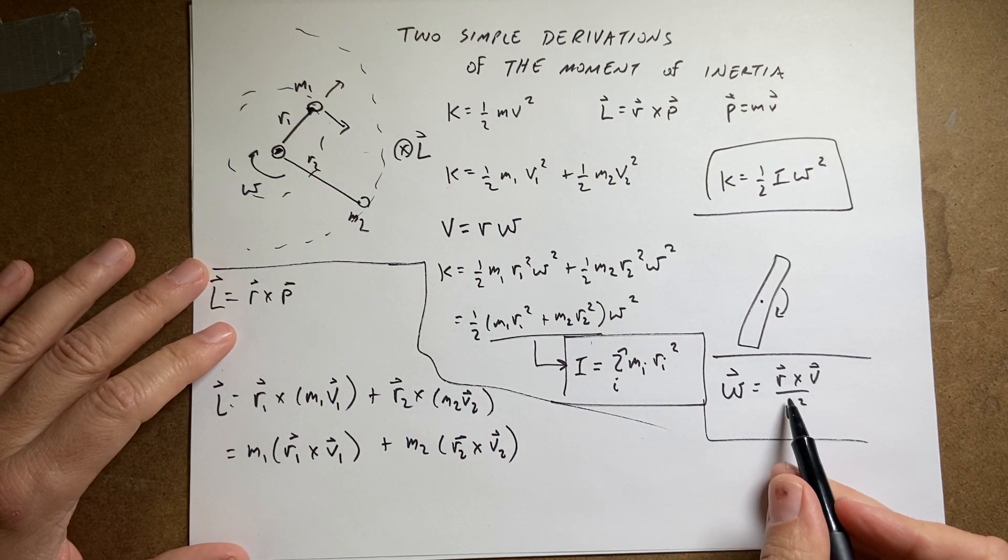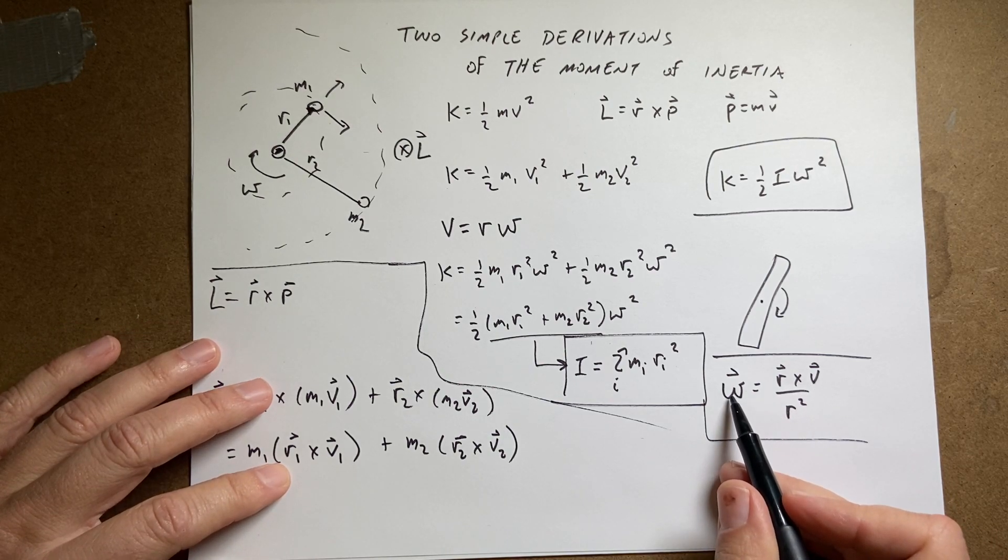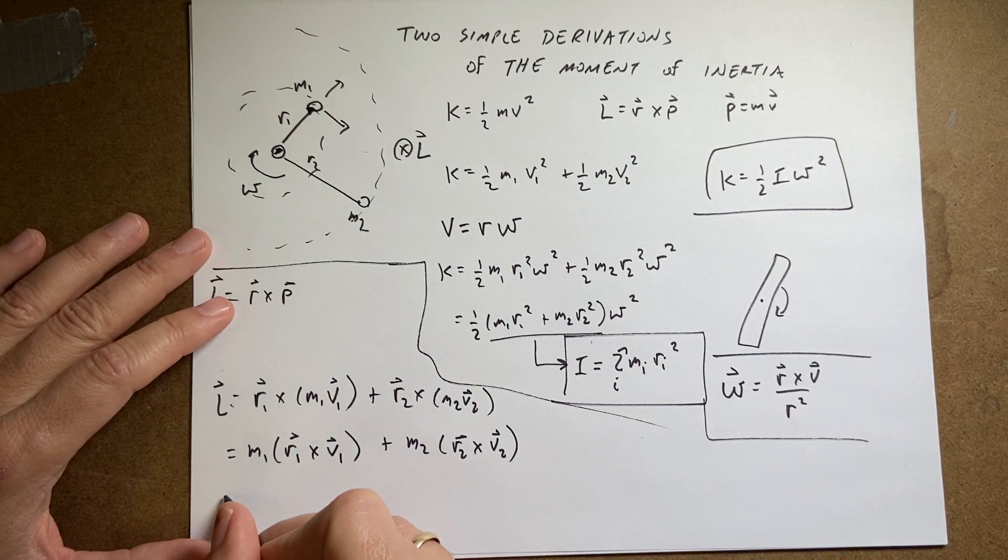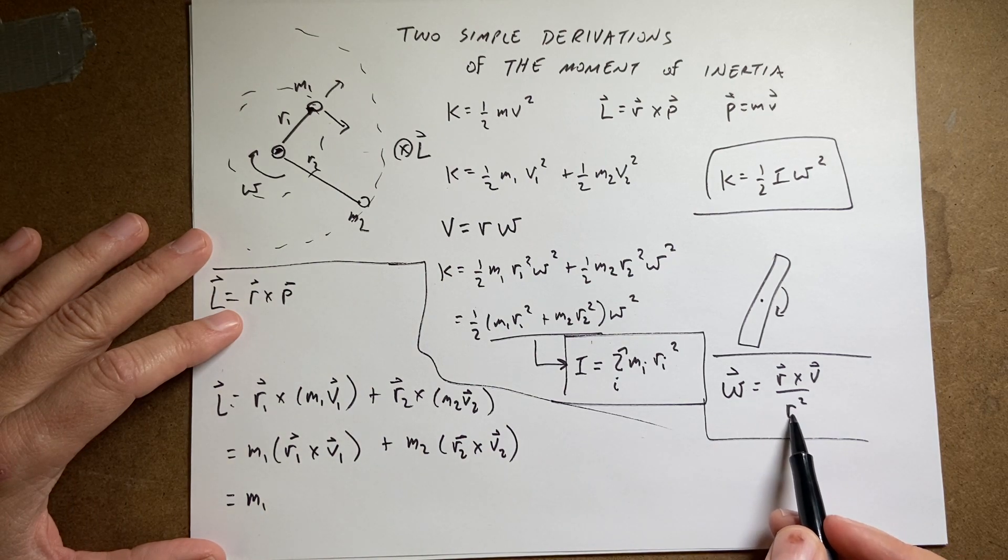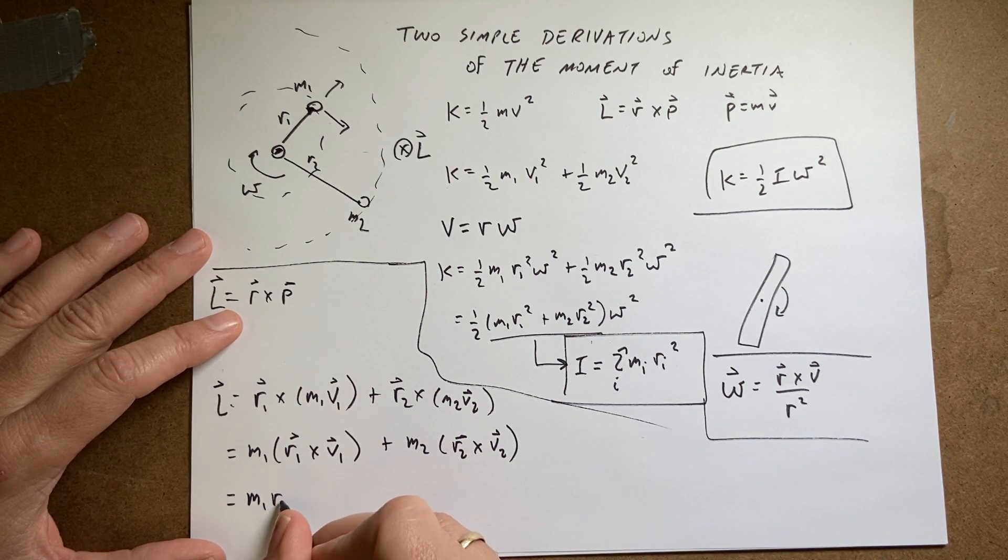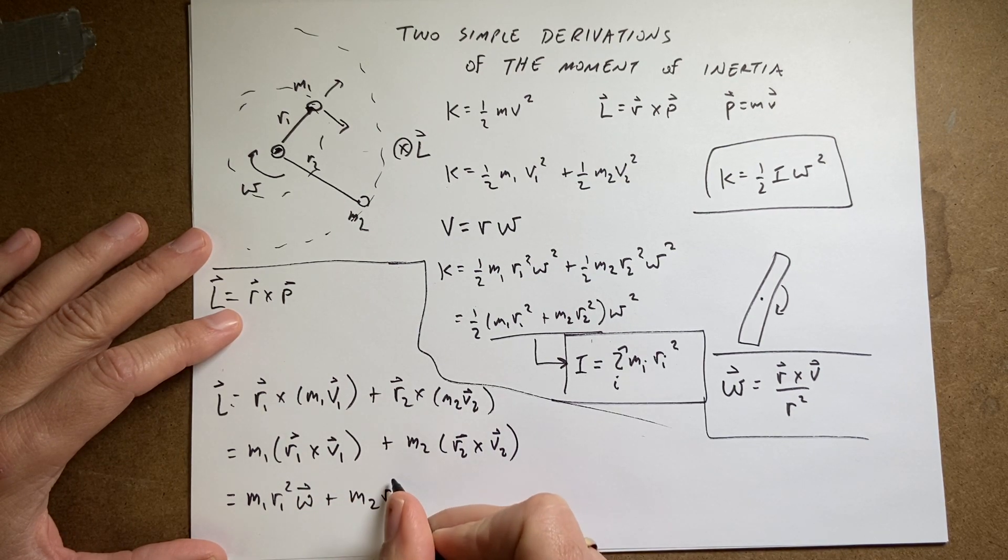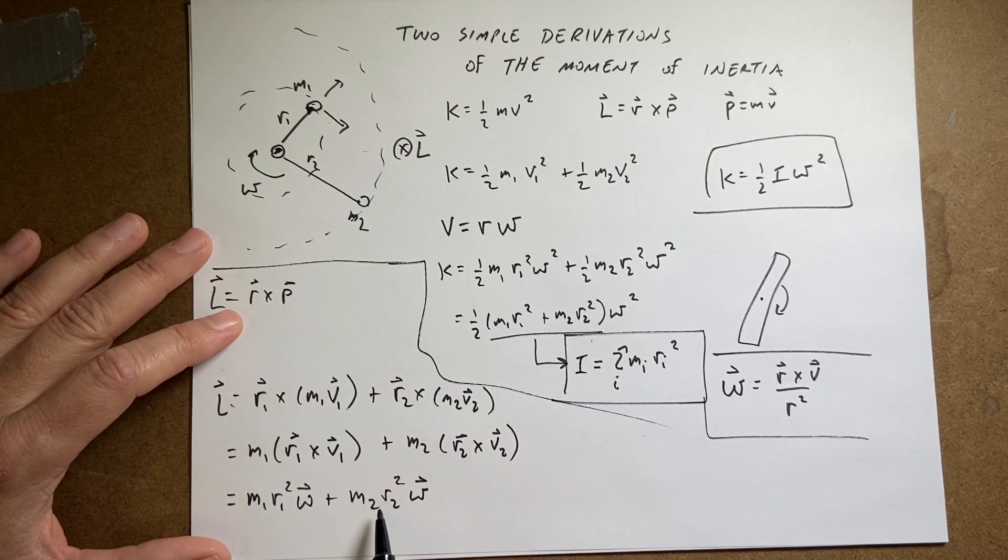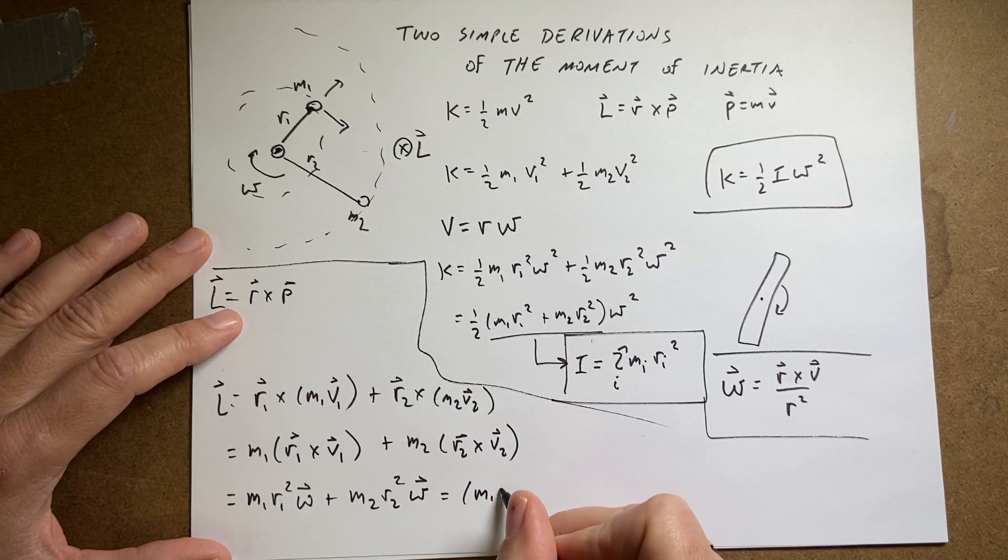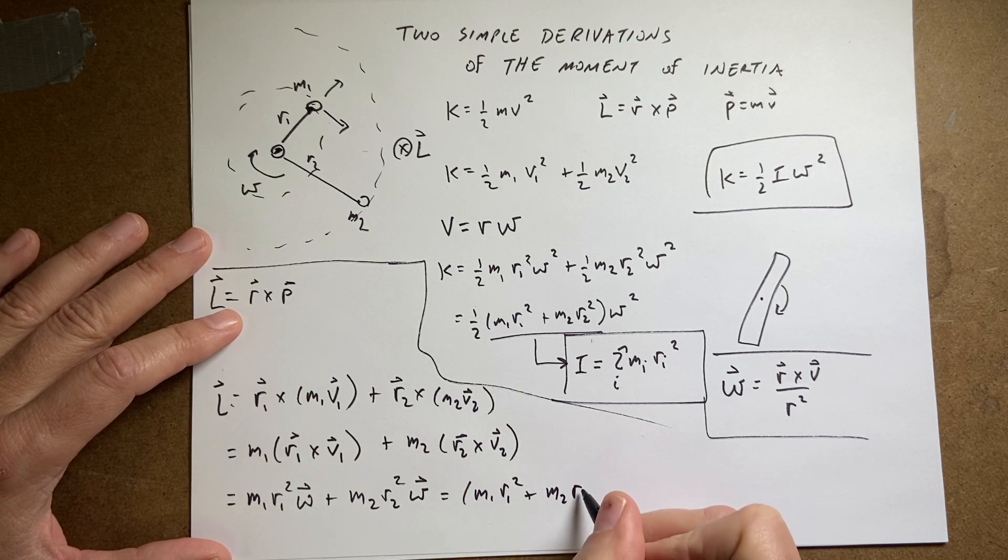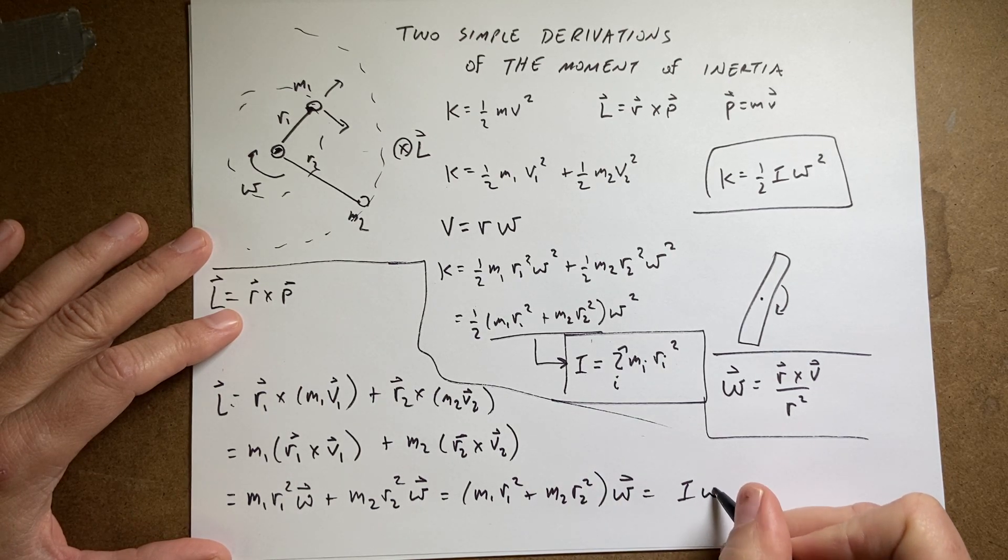So if that's true, then I can write this. I can write r cross v as r squared omega. So, and again, we have the same angular velocity. So I have m1. Now instead of r1 v1, I get r1 squared omega vector, plus m2 r2 squared omega. And then I can factor that out, and I get m1 r1 squared plus m2 r2 squared omega equals i omega.